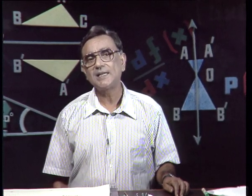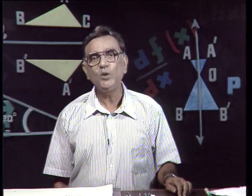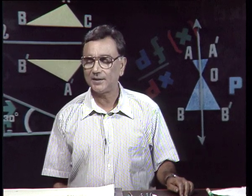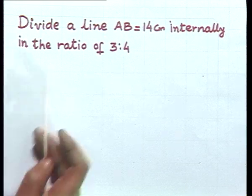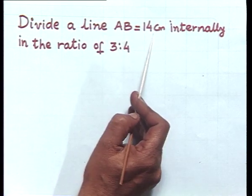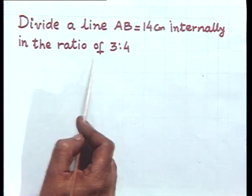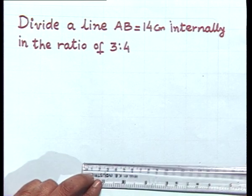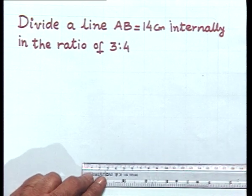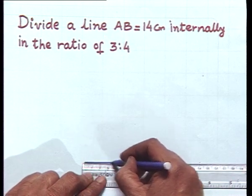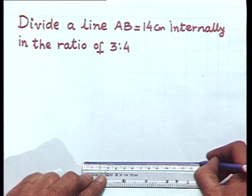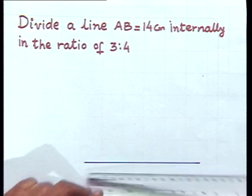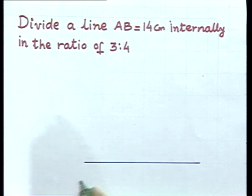The very first construction is: if we are provided with a straight line and we have to divide it in a given ratio, then how this theorem is helpful to us, let us see that. Here in the problem: divide a line AB of 14 centimeters internally in the ratio of 3 is to 4. To divide the line AB which is 14 centimeters in length, first we shall draw a line of 14 centimeters, naming this line as AB.